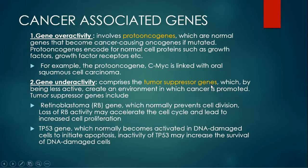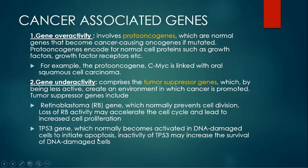The RB gene normally prevents cell division. If there is underactivity or loss of RB activity, it may accelerate the cell cycle and lead to increased cell proliferation, causing cancer. The TP53 gene is normally activated in DNA-damaged cells to initiate apoptosis — it kills damaged cells so they don't harm the body. When there is underactivity of TP53, it may increase the survival of DNA-damaged cells, which then further proliferate and form cancer.